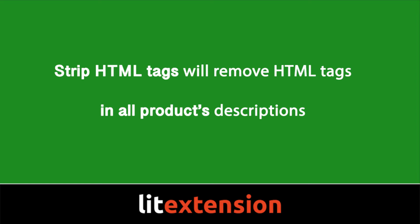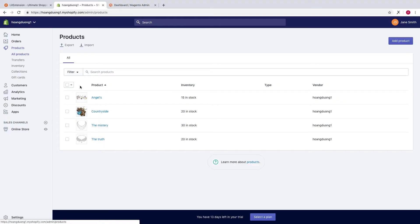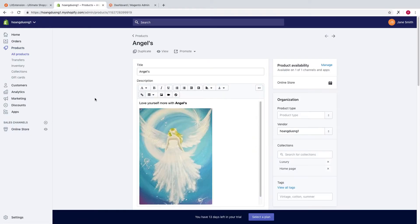Strip HTML tag is an action of removing HTML tags in descriptions on the target store. For example, here you can see a description with an HTML tag.